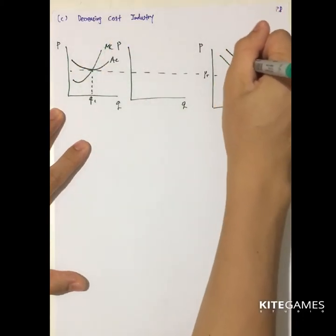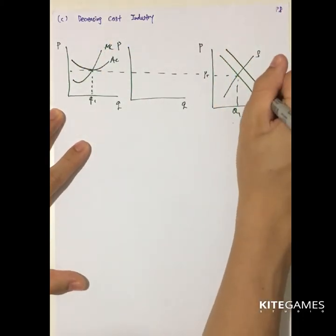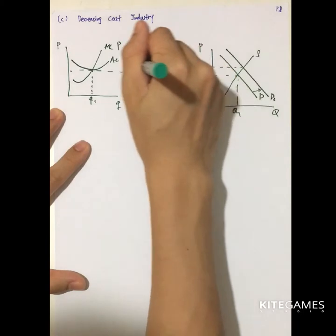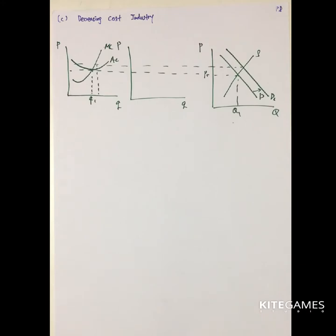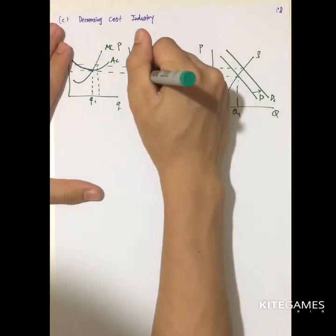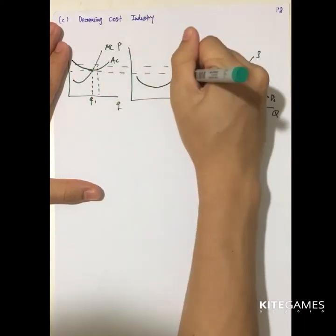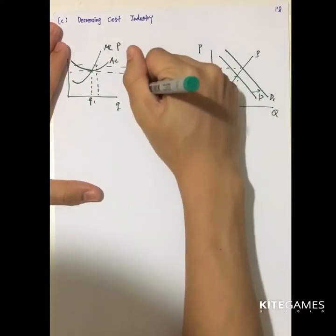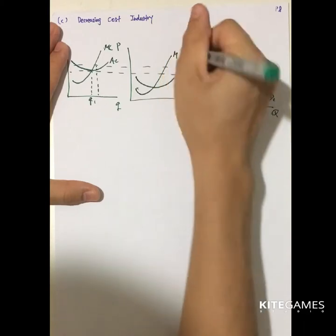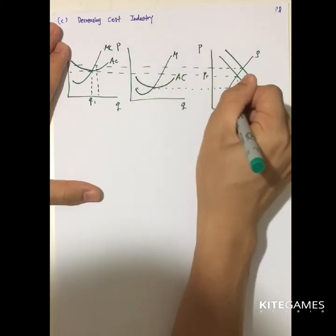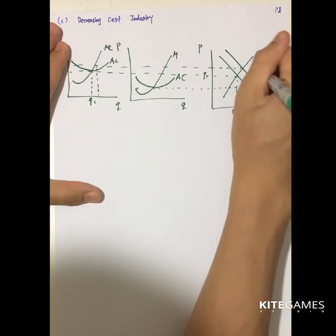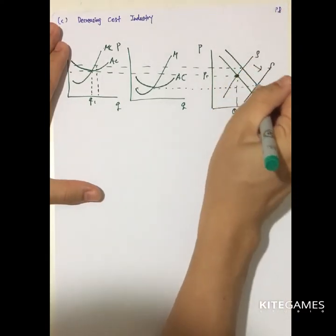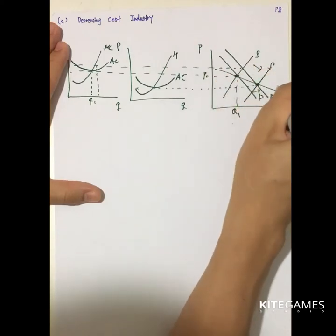Now suppose demand increases, price is higher, and the firm can experience some profit. Newcomers emerge, and the newcomers may be able to produce at a cost lower than the original suppliers. So the price will go down — the supply curve shifts right — and the long-run supply curve connecting the equilibria is downward sloping.